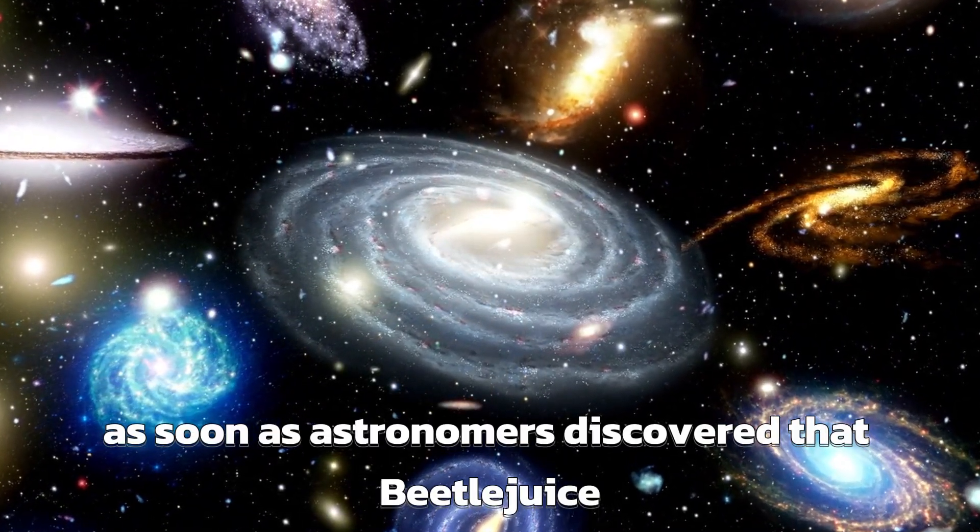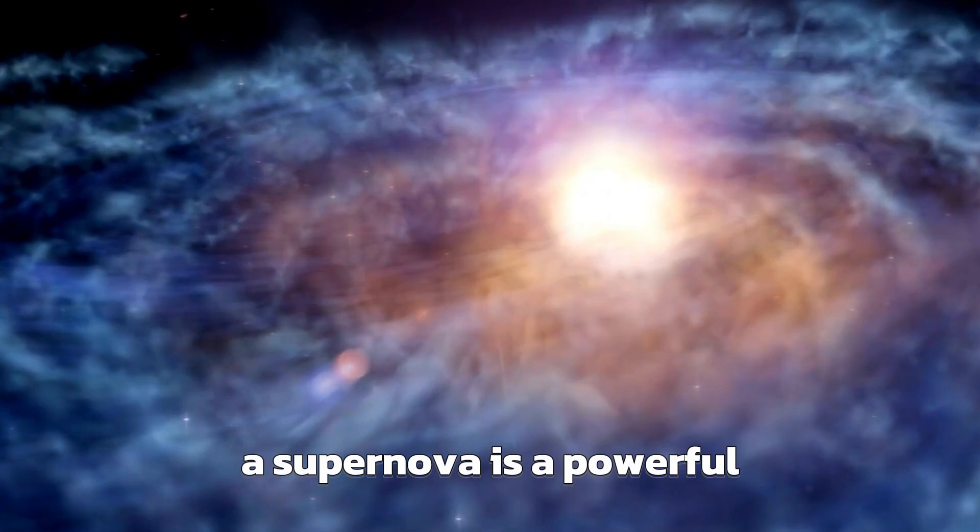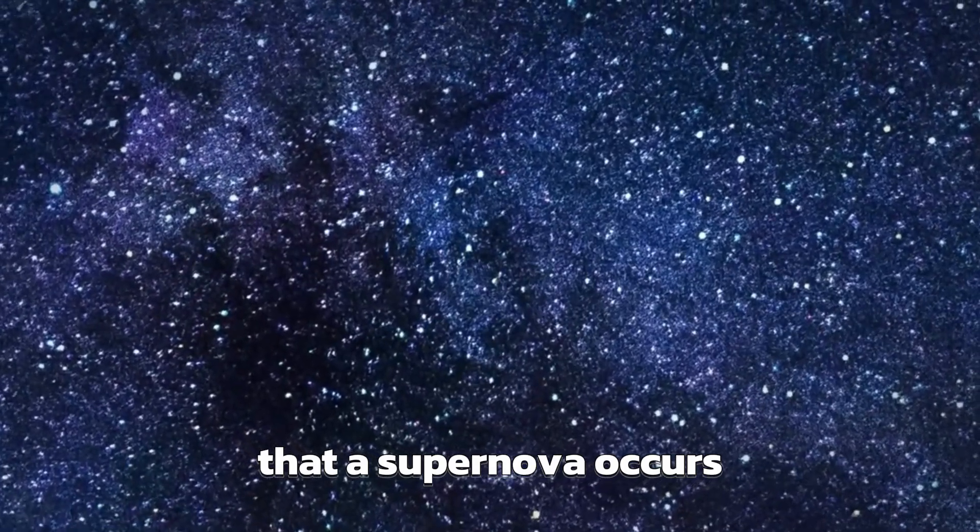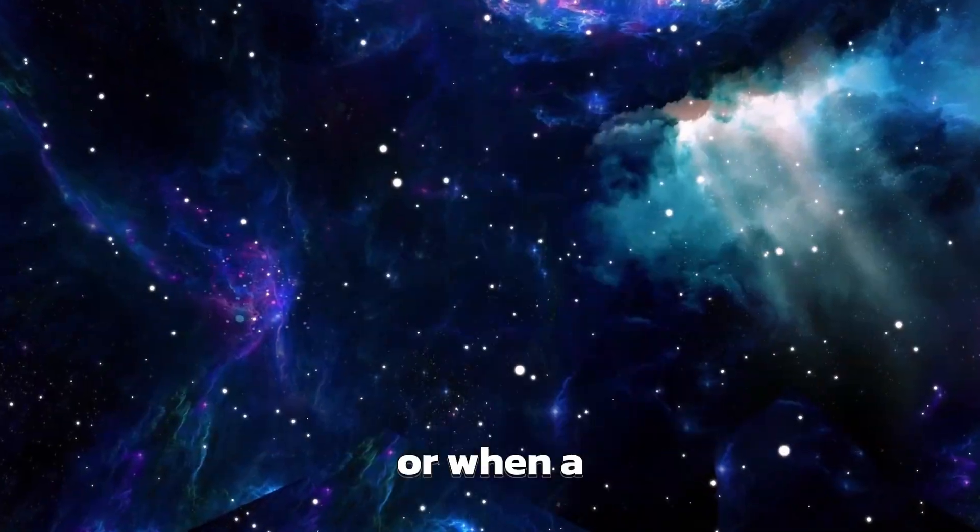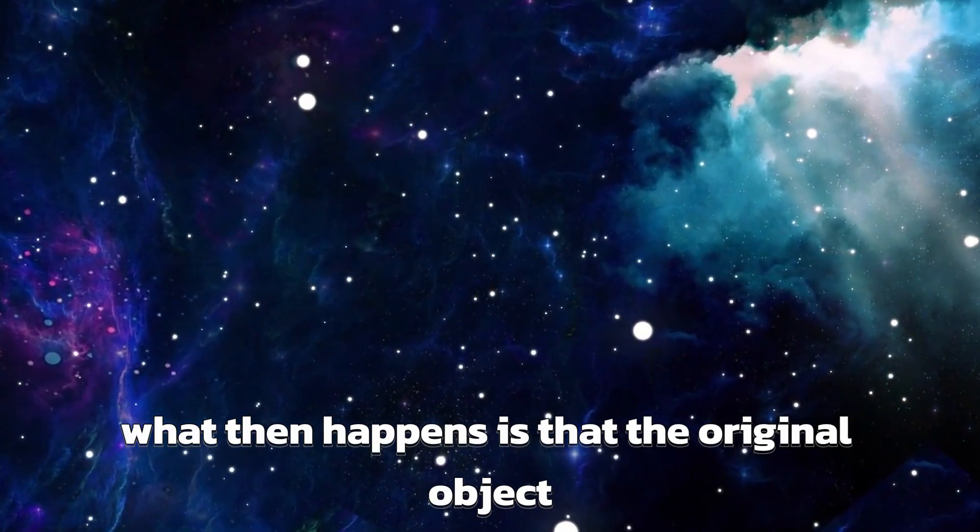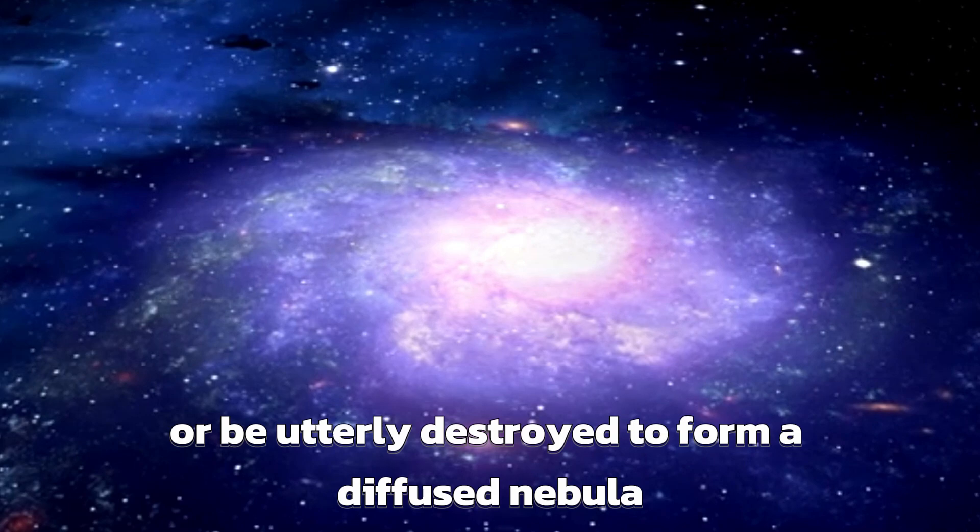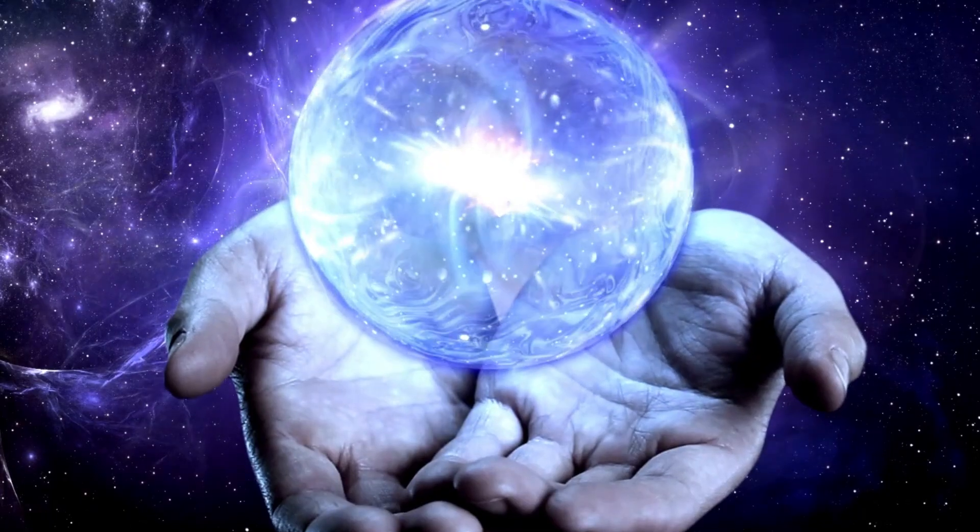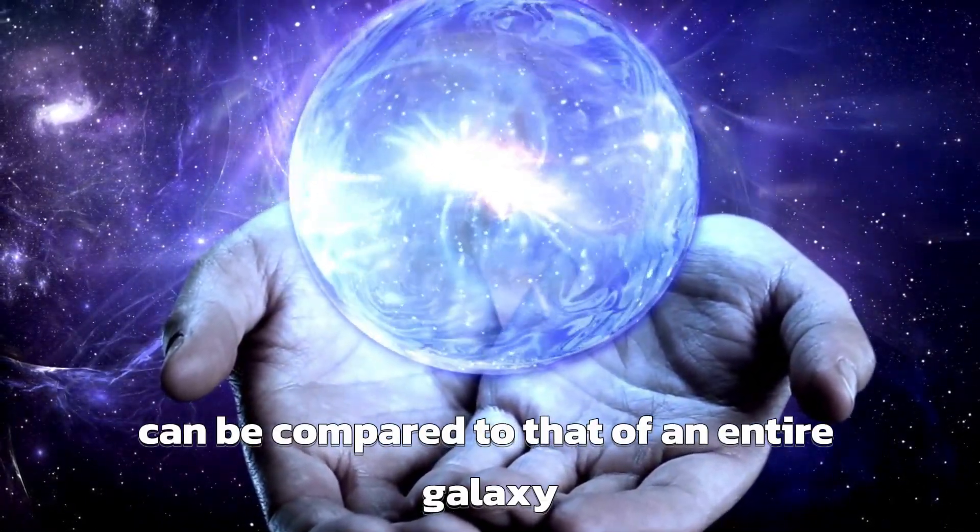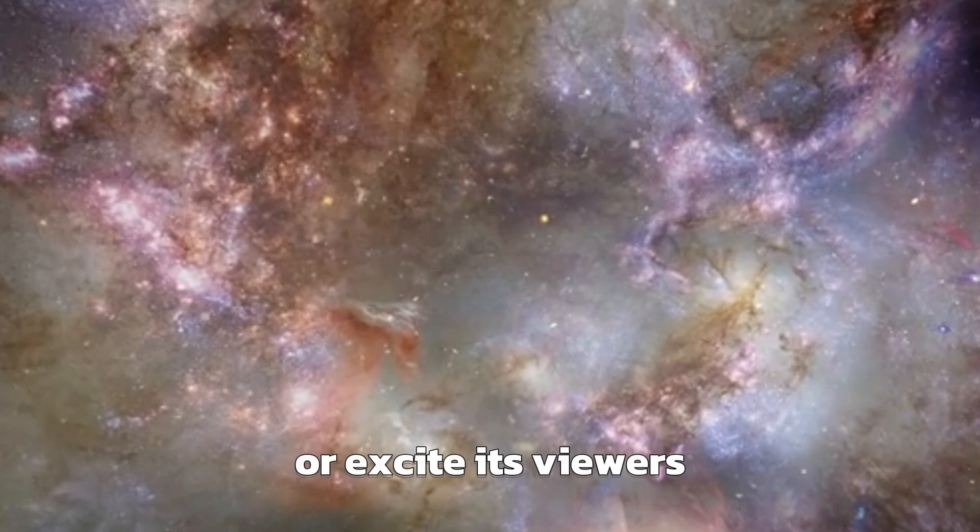As soon as astronomers discovered that Betelgeuse was bound to supernova, the scientific community was on high alert. A supernova is a powerful and luminous explosion of a star. Scientists have explained that a supernova occurs during the last evolutionary stages of a massive star or when a white dwarf is triggered into runaway nuclear fusion. What then happens is that the original object, which is known as a progenitor, would either collapse into a neutron star or black hole or be utterly destroyed to form a diffused nebula. If Betelgeuse explodes today, the peak optical luminosity of the supernova can be compared to that of an entire galaxy before fading after several weeks or months. The sheer sight of this event would either scare or excite its viewers.